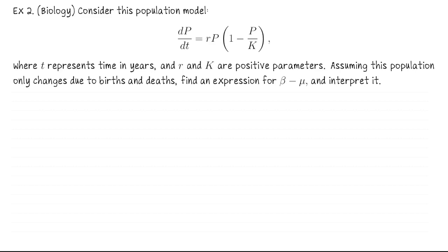For our last example in this lecture, let's look at a new population model. This is dp/dt equals r·p times (1 minus p over k). Here t is time in years, r and k are positive parameters (constants), and we're assuming this population is closed. Let's find an expression for beta minus mu and then interpret it. Since the population is closed, dp/dt equals (beta minus mu) times p of t.